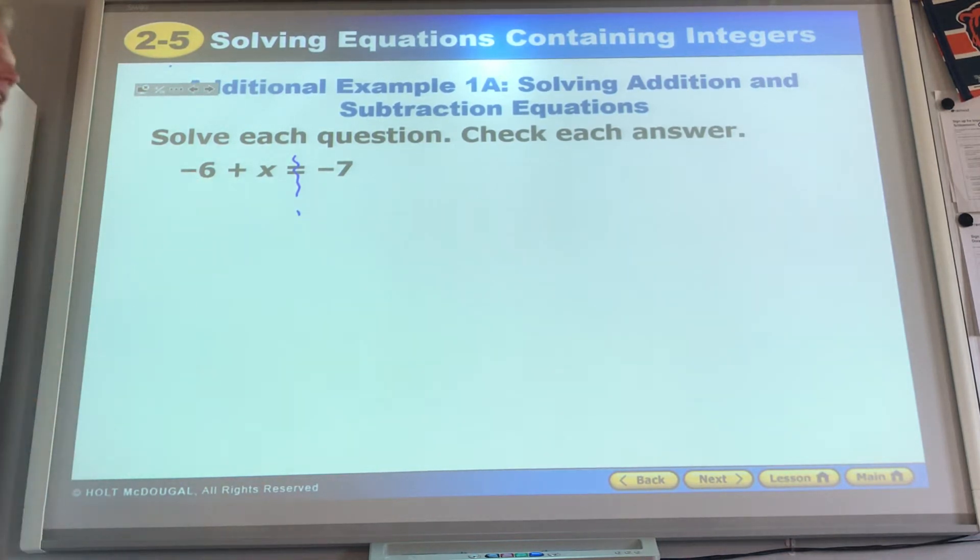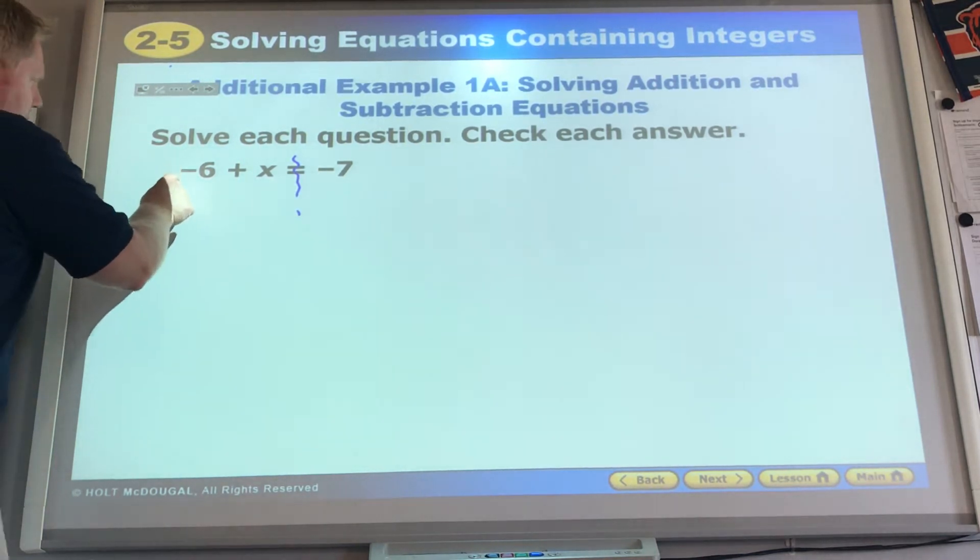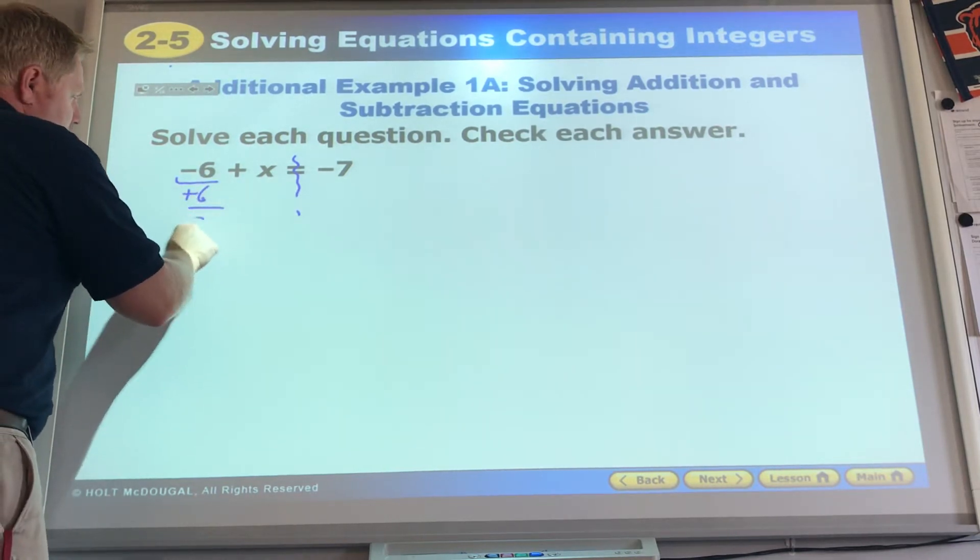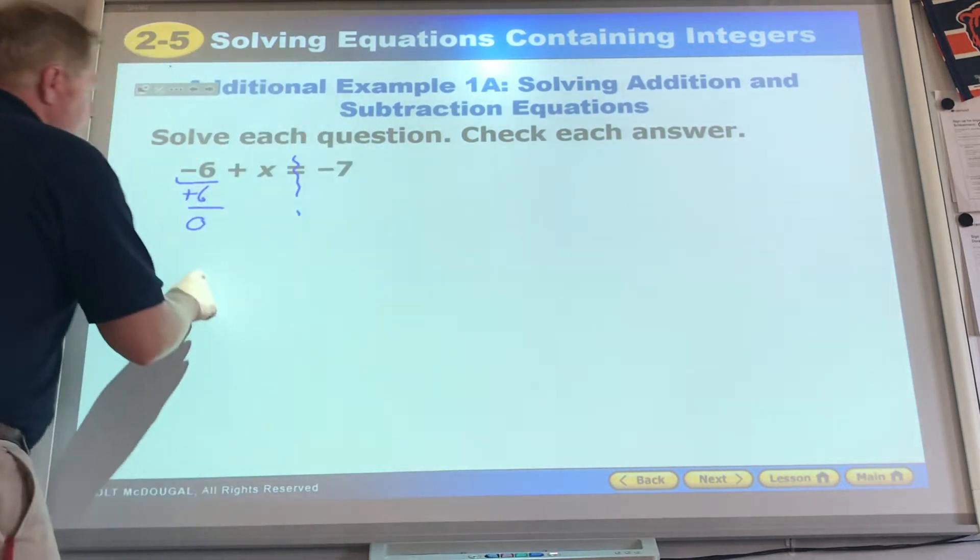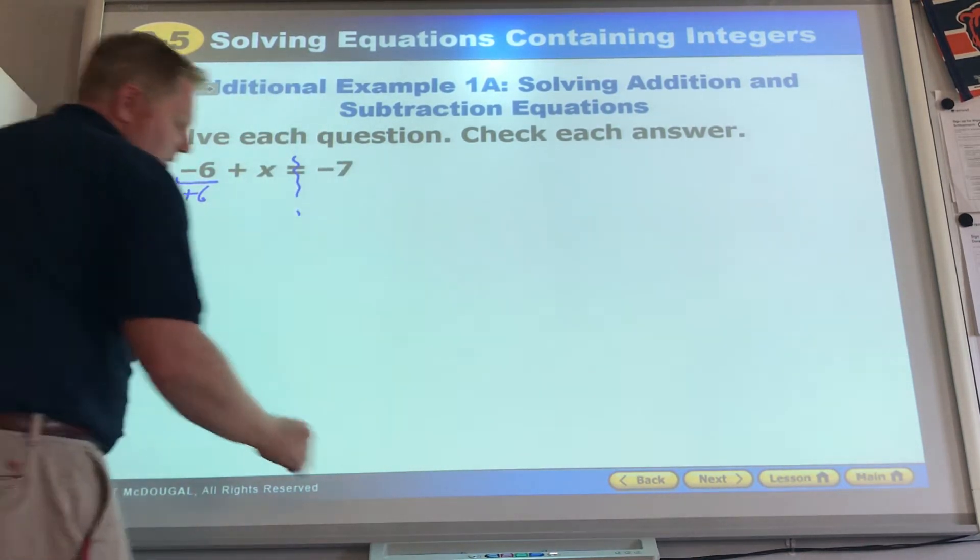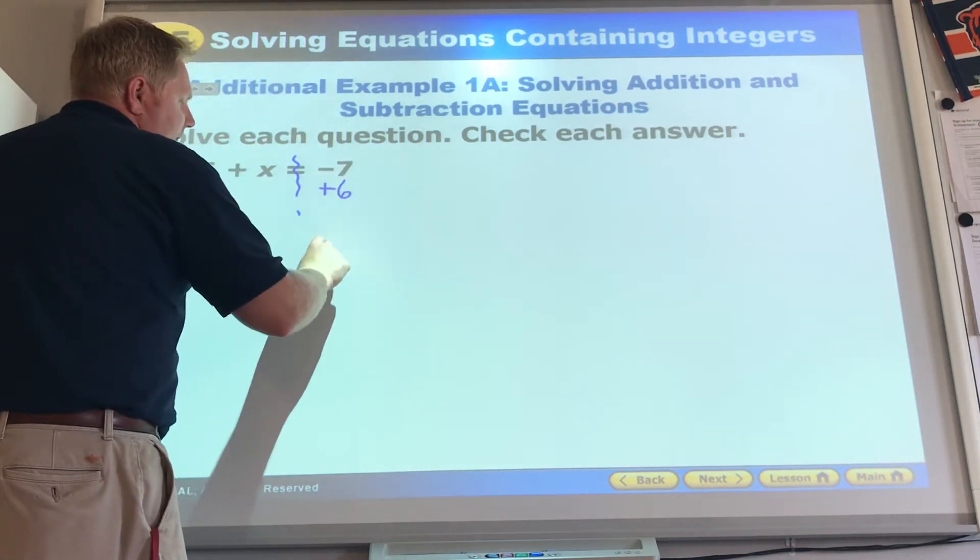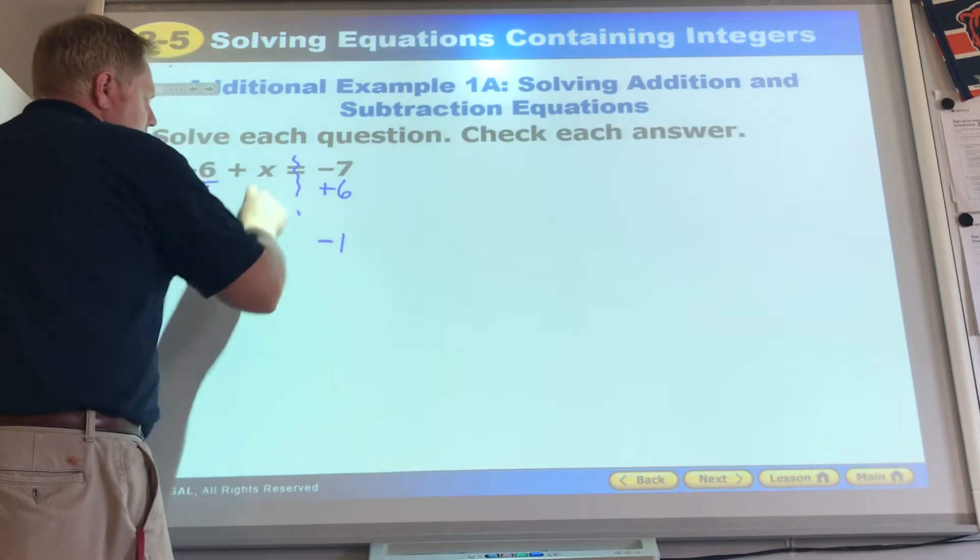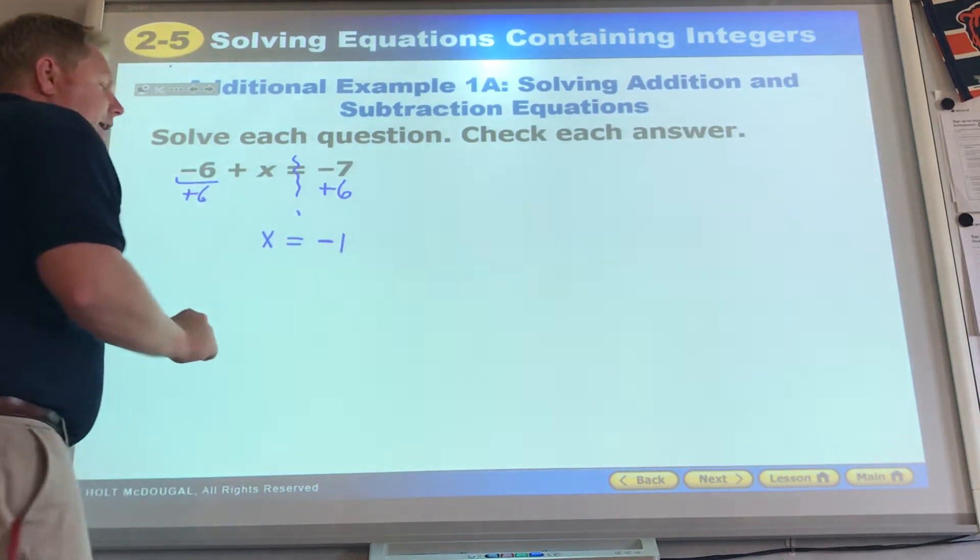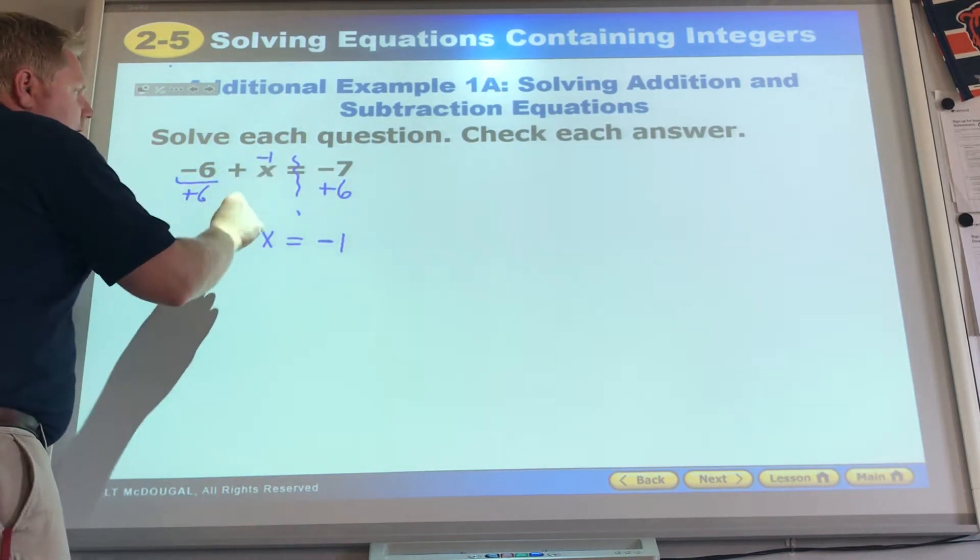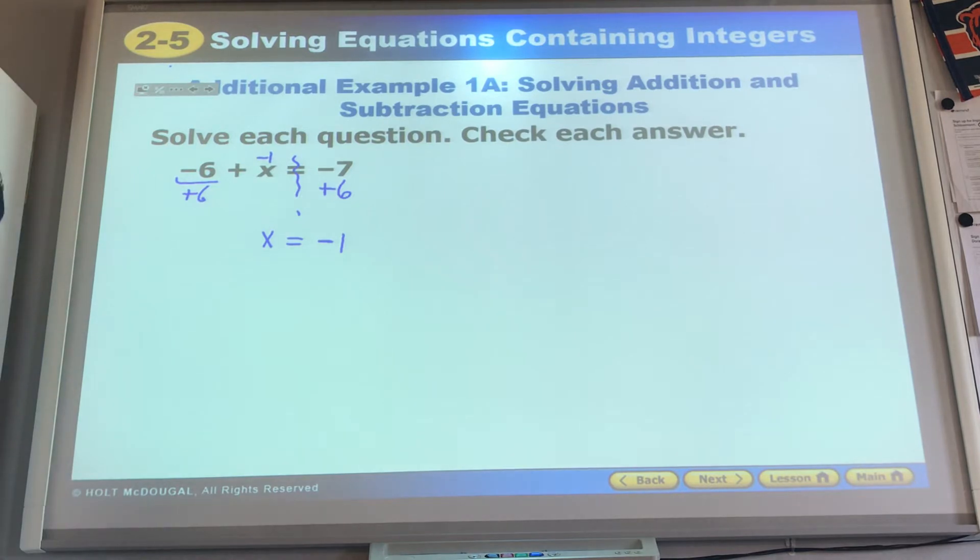There's a negative 6. Well, how do I get negative 6 to 0? I do the opposite. The opposite of negative 6, I would add 6. Negative 6 plus 6, that makes 0. That's what I want. So, if I add 6 to this side, what must I do to the other side? I must add 6. That is negative 1, x equals negative 1.